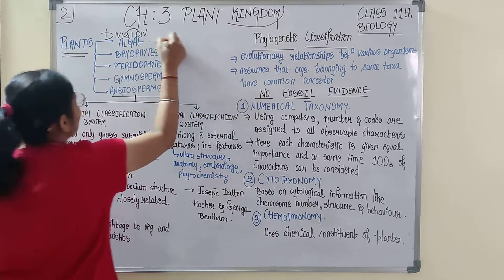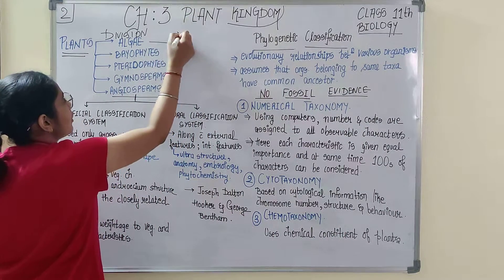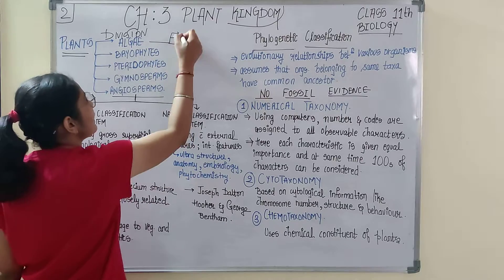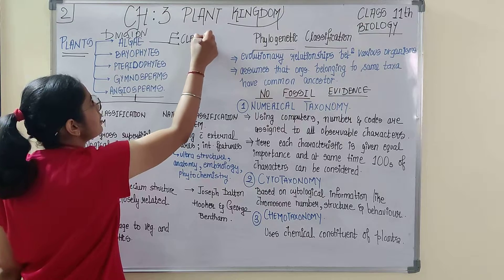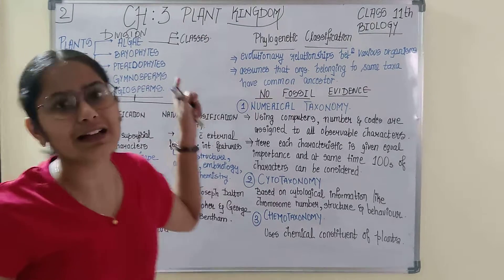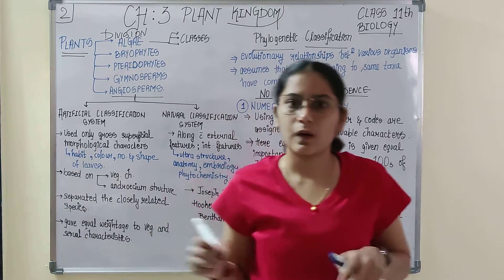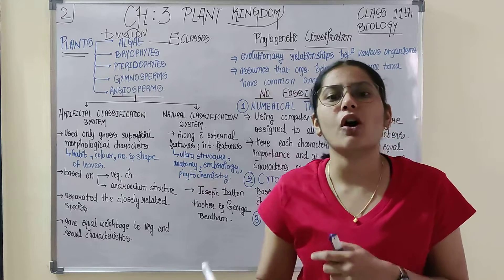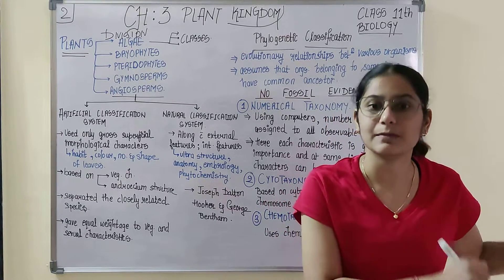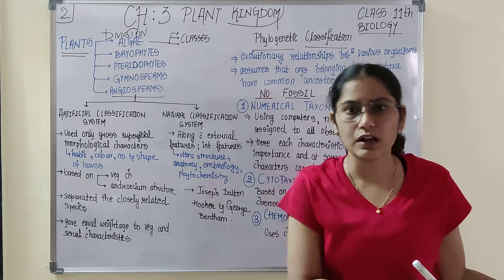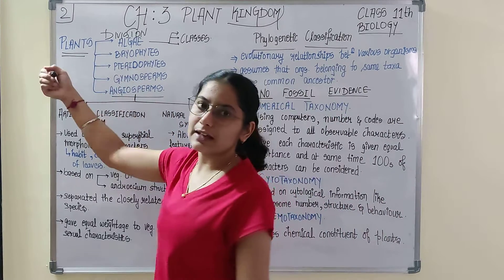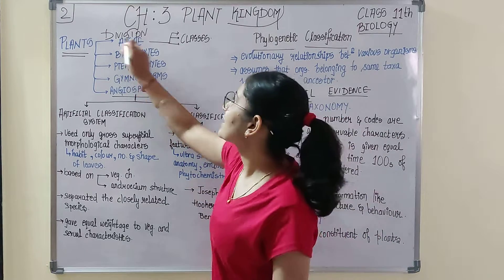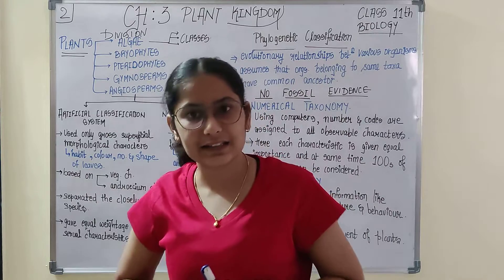If we further divide algae into three groups — Chlorophyceae, Rhodophyceae, and Phaeophyceae — what are those? These further subdivisions are nothing but classes. So we restrict ourselves up to classes. If we move further down, then comes order, then family, then genus, then species. Here we would be focusing on kingdom, their divisions, and their classes, studying their general characteristics.